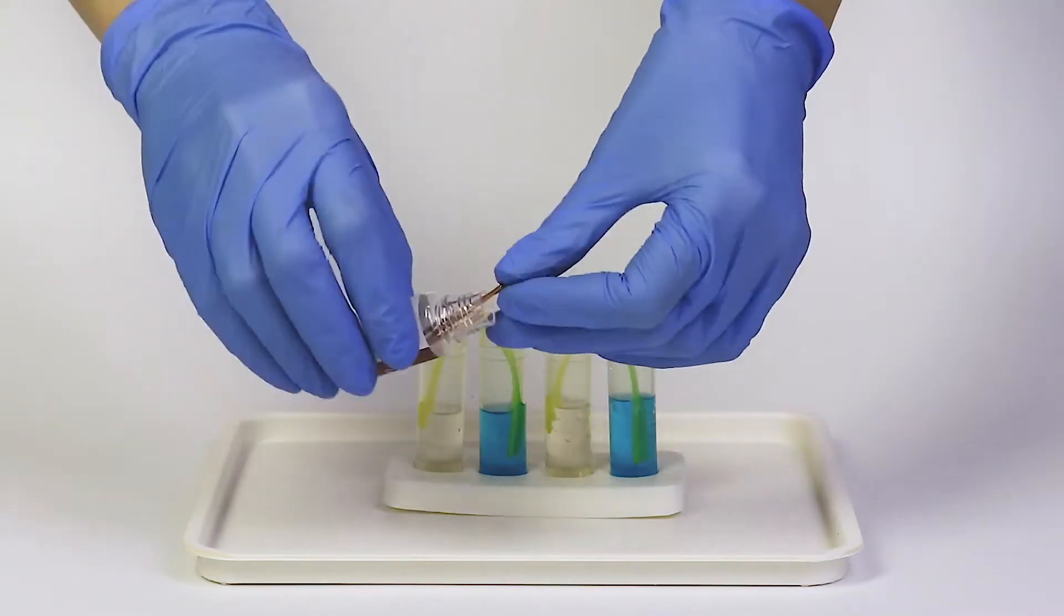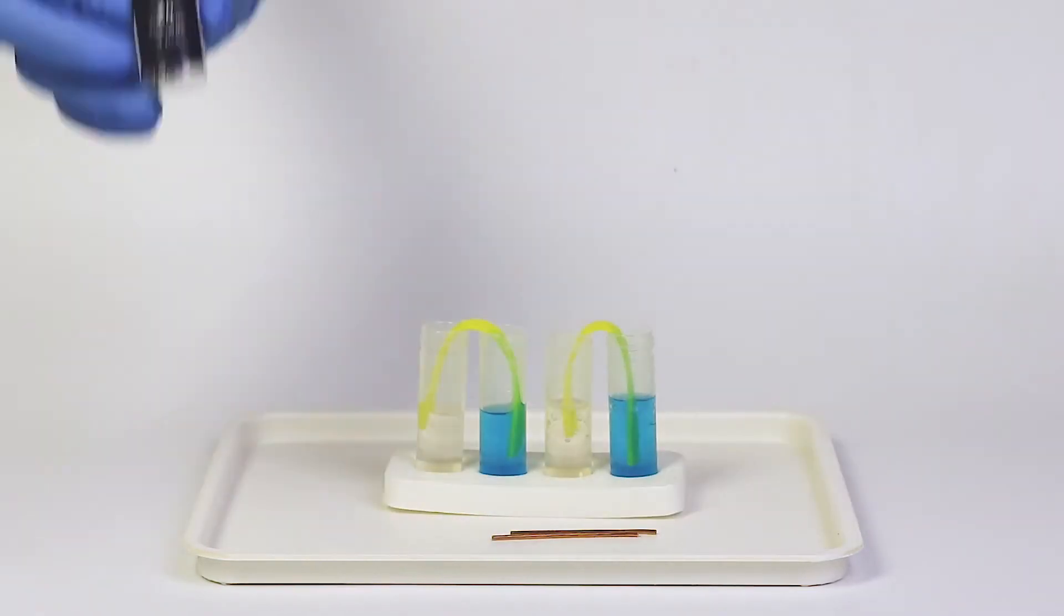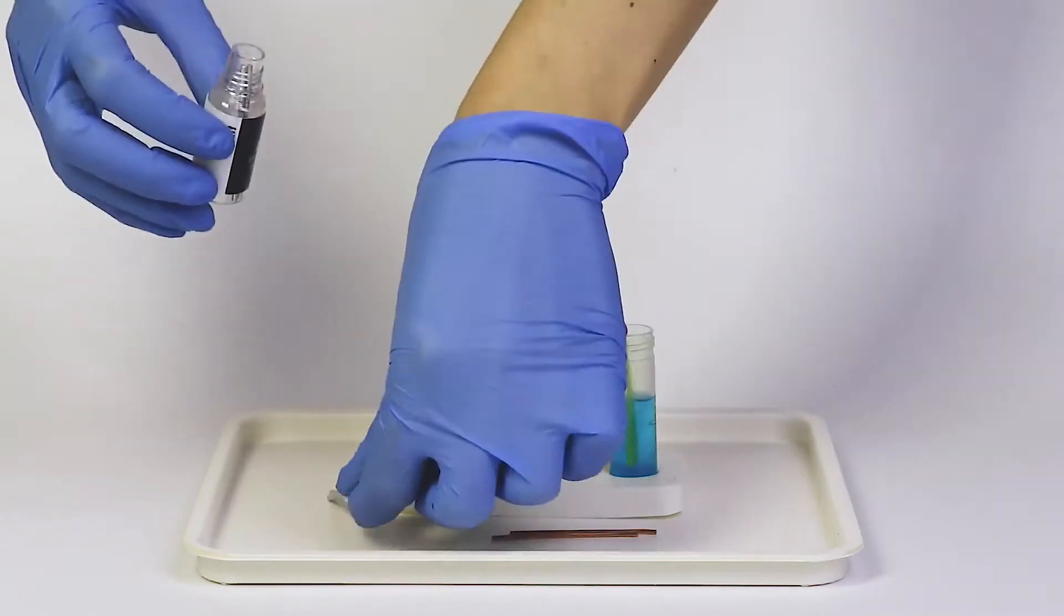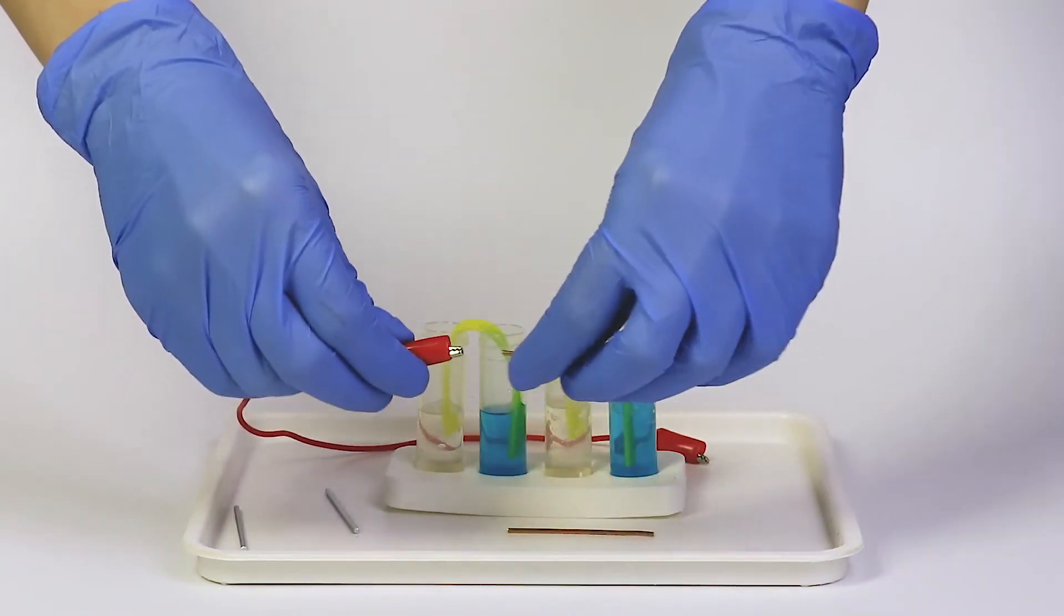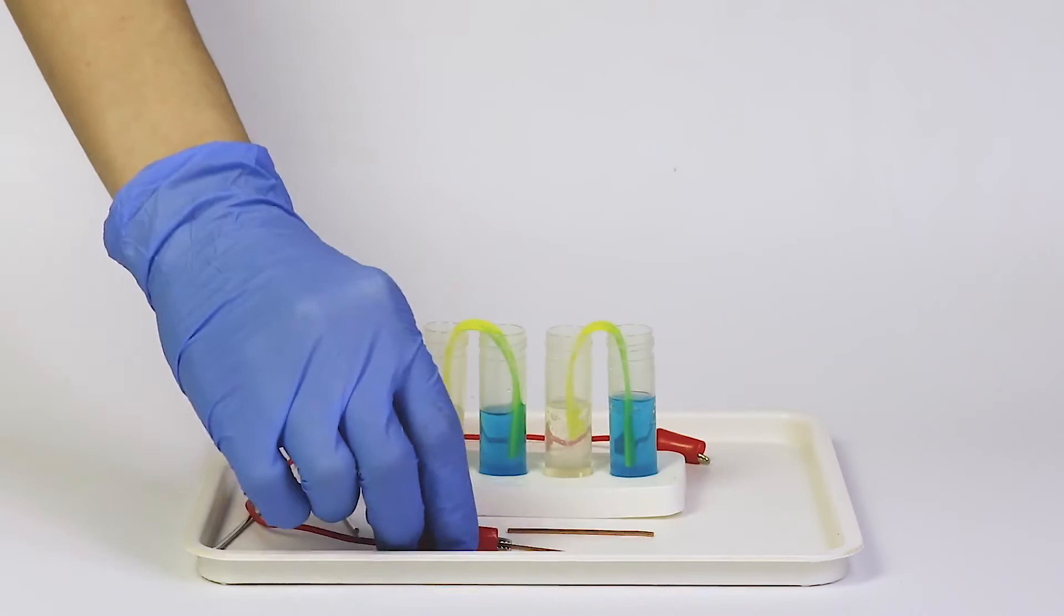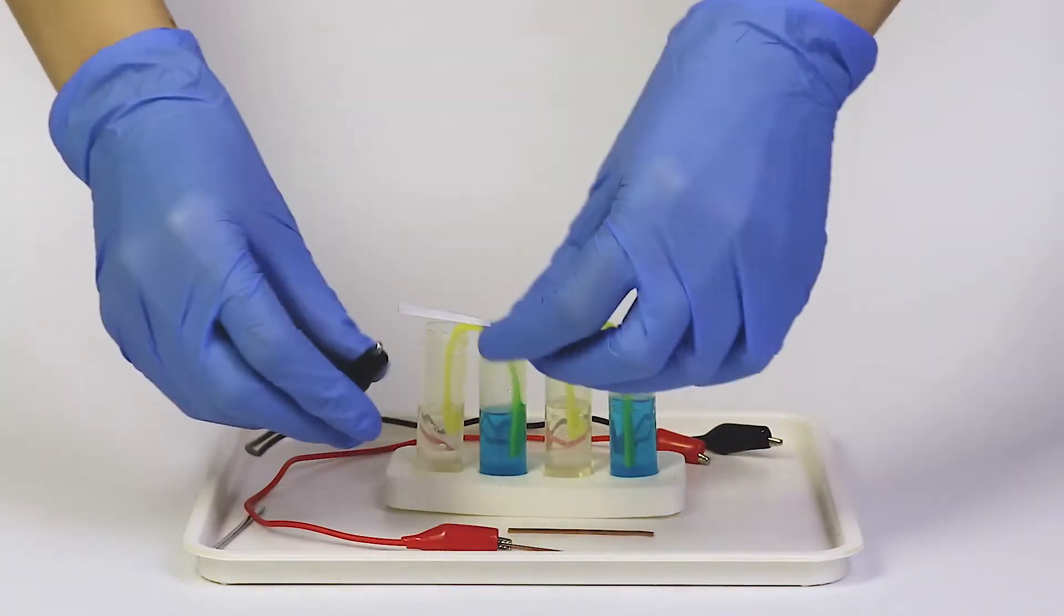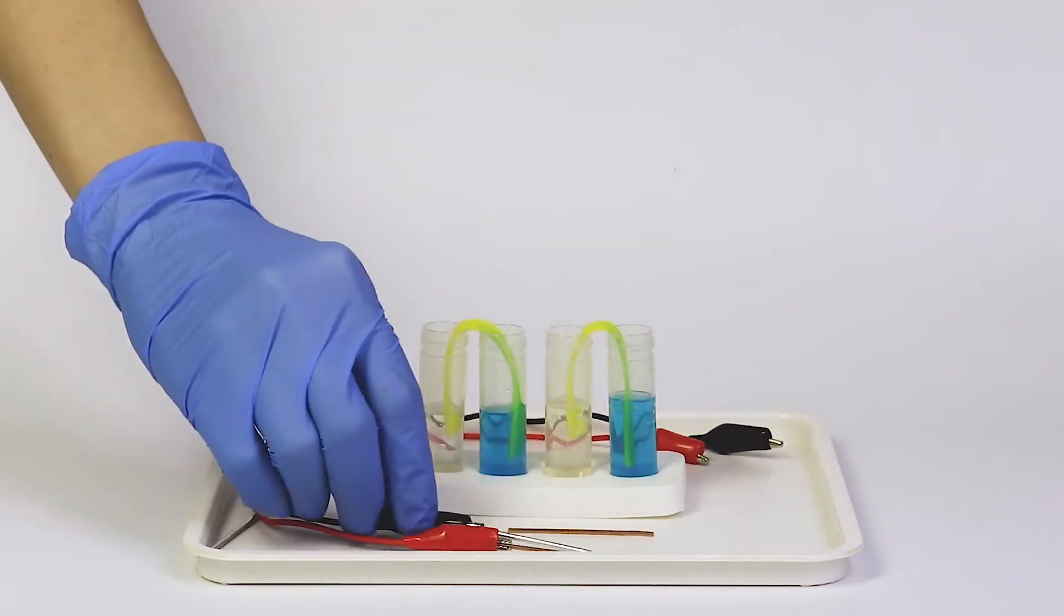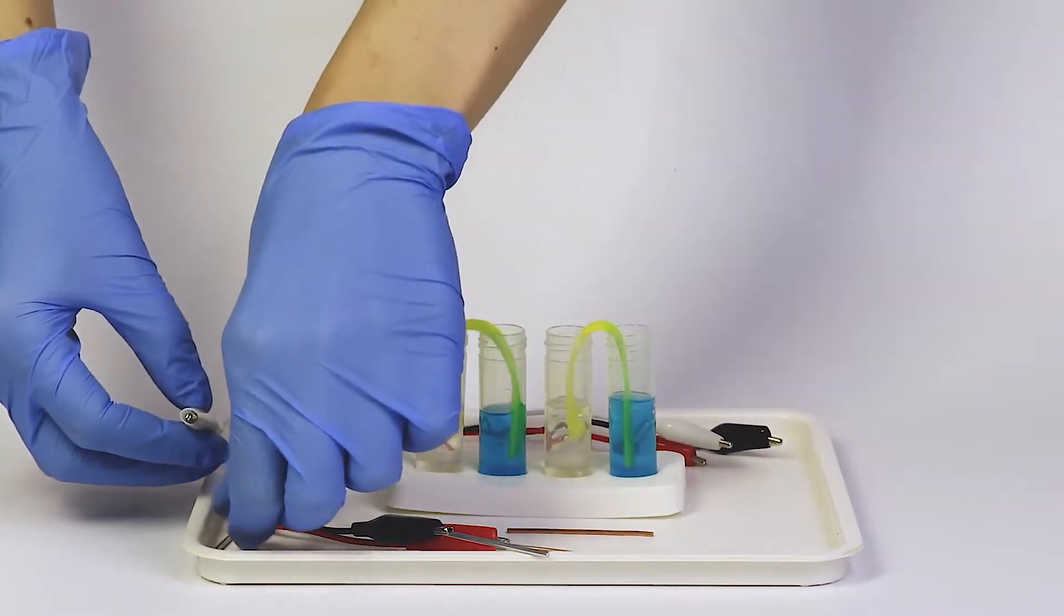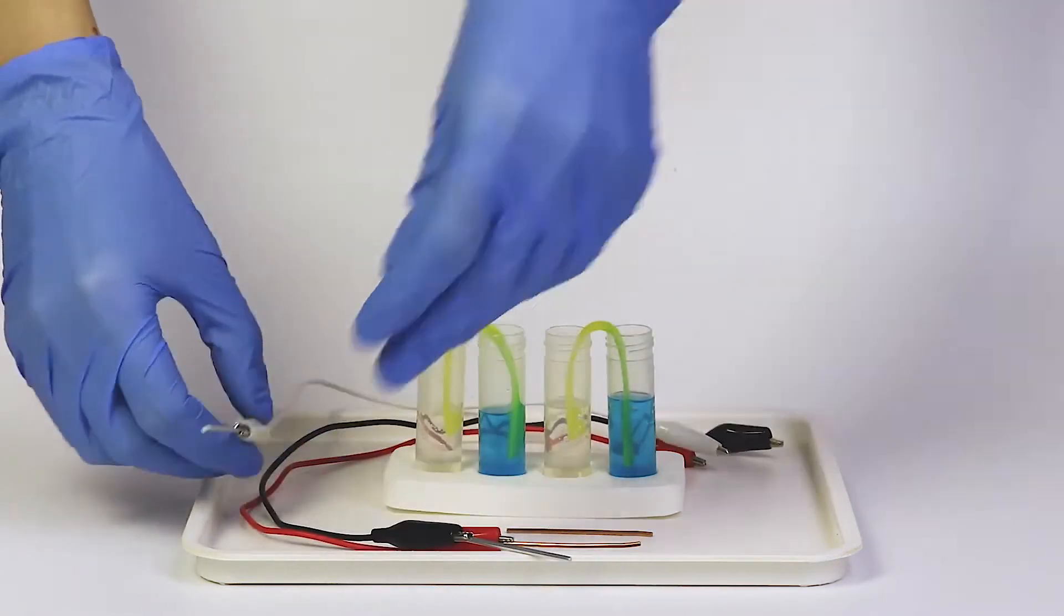Now, take two copper rods and two zinc rods. Connect one copper rod to the red wire and one zinc rod to the black wire. Then, take a white wire and connect it to the remaining copper and zinc pieces.